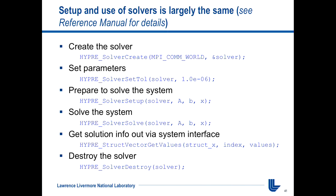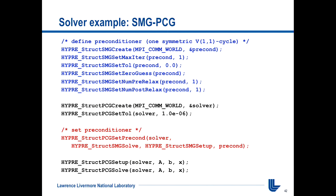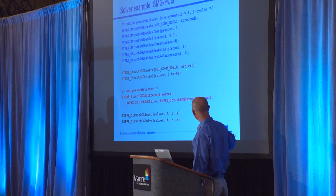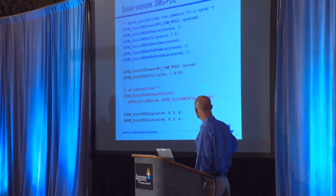Setting up a solver is a lot like what I showed for the matrix. There's a create call, then you set parameters such as tolerance for the stopping criteria, a setup call, and a solve call. You get values out using the same conceptual linear system interface you used to set the problem up, then destroy things when done. For preconditioned conjugate gradient, you set up the preconditioner first by calling create and setting some values, then set up the CG solver, set the tolerance, pass in the preconditioner, and do setup and solve.